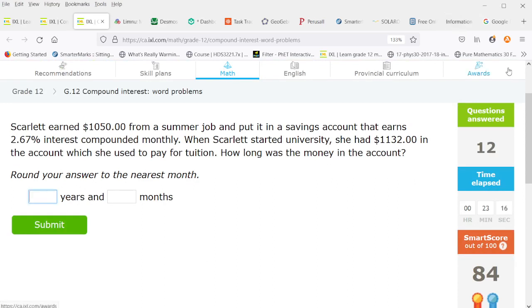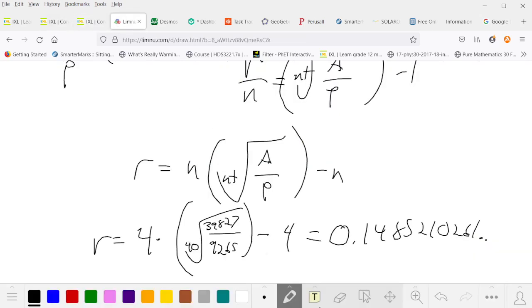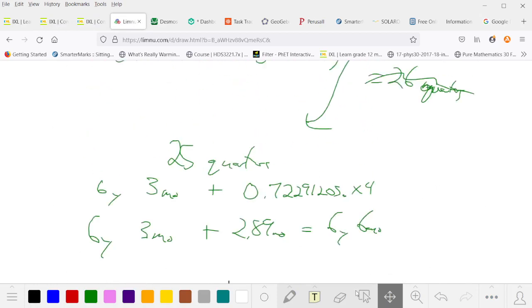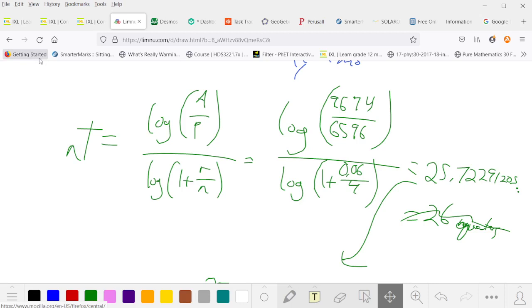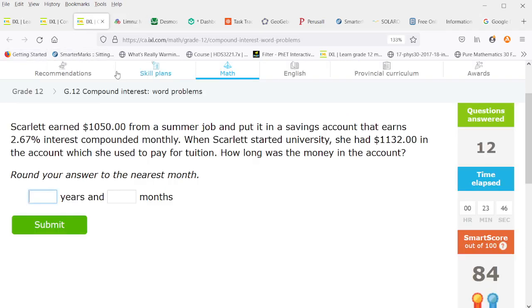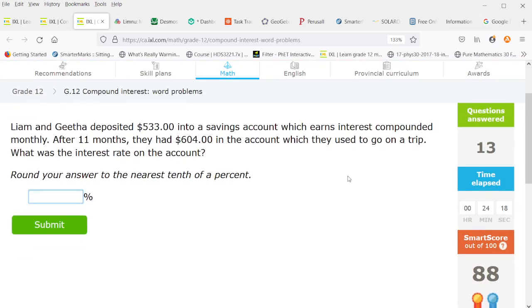All right so Scarlett earns 1050 from a summer job and put it in a savings account that earns 2.6 percent interest compounded monthly. Once Scarlett started university she had 1132 dollars in the account that she used to pay for tuition. How long was the money in the account? So we are back to solving for nt or the number of interest periods. So we're back to this equation, the log A over P divided by log of 1 plus r over n. So the log of 1132 over 1050 divided by the log of 1 plus 2.67 percent interest rate compounded monthly. That works up to 33.833, so that's 34 months which is two years and 10 months.